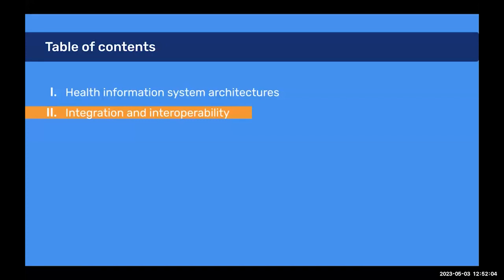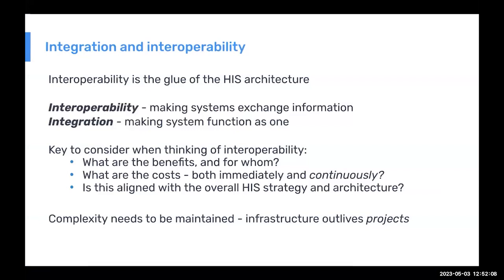Moving to integration and interoperability — they are closely related. The lines you draw between systems in an architecture diagram represent interoperability and integration. A simplified definition: interoperability is about making two systems able to communicate and exchange data or information, while integration is about making those systems function as one. To have integration, you very often need interoperability working in the background to link the systems.